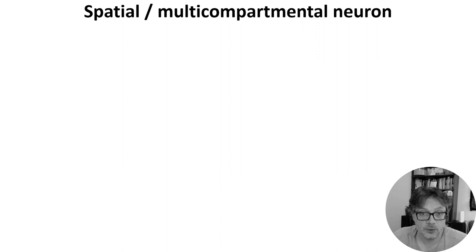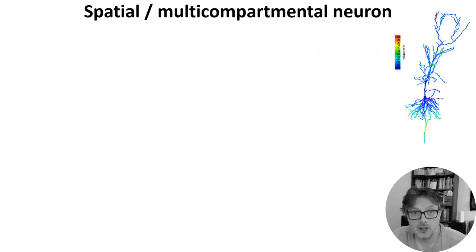One thing we've totally ignored so far in all of the models we've talked about is that neurons have a very complicated spatial structure with dendrites and axons and, as you can see in the picture, activity that travels around the cell.